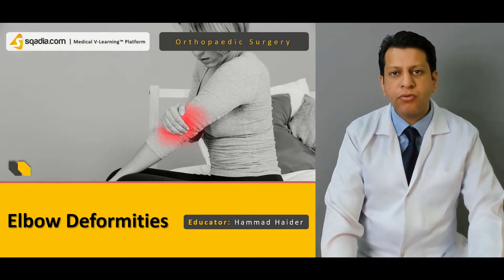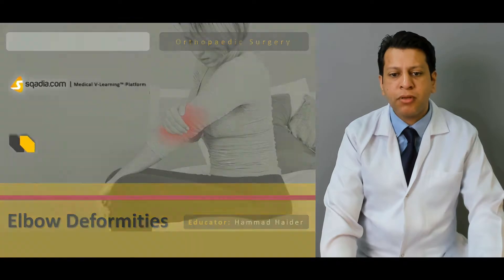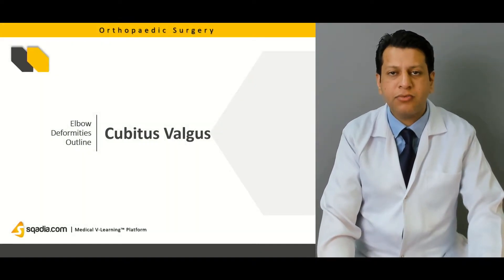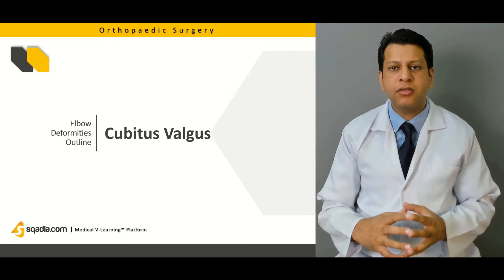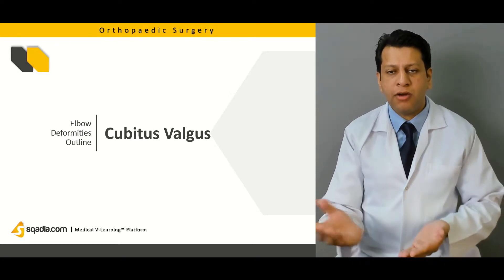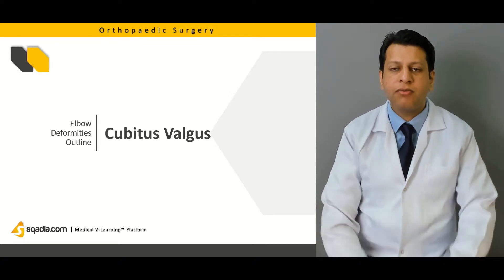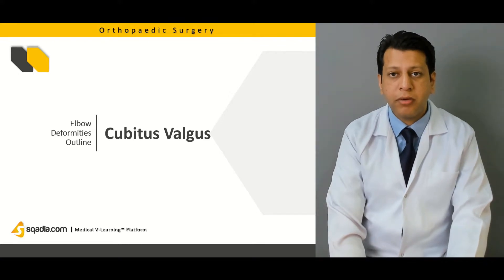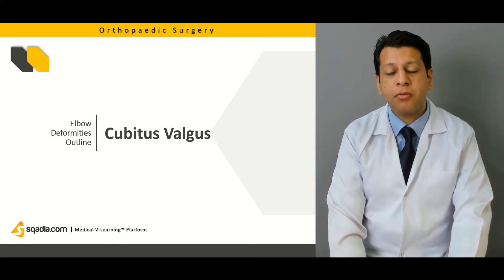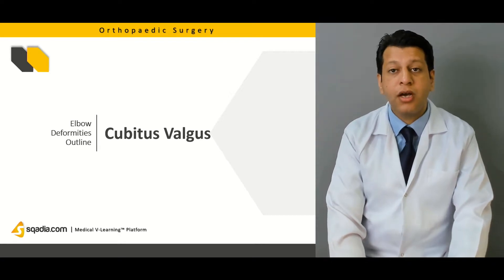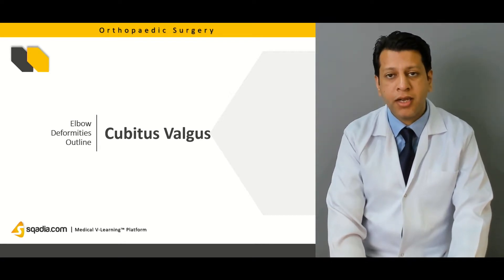We'll be moving on to the problem called cubitus valgus. What is valgus? When we say valgus, it actually means that the forearm is moving outwards. We'll be discussing what are the different problems which can lead to cubitus valgus and what are the remedies for cubitus valgus, because the ulnar nerve is passing just below the medial epicondyle.